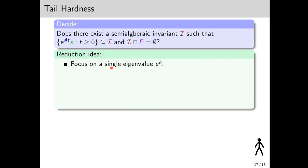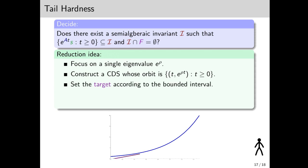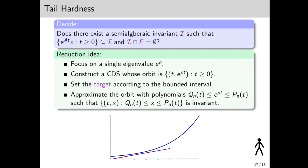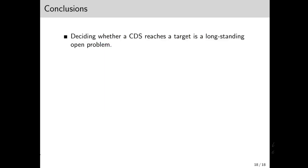So how does the reduction work? Let's focus on the single eigenvalue e to the rho. We construct a CDS whose orbit is this, and we set a bounded target according to the bounded interval. We now approximate the orbit with upper and lower polynomial bounds, such that the set of points between them forms an invariant to the CDS when we add the region of all points above the bound. Then the orbit doesn't intersect the target in the bounded domain if and only if there is a semi-algebraic invariant obtained by tightening the bounds enough.